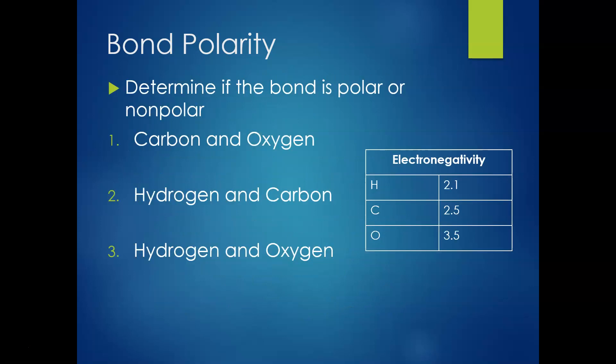So let's do some practice with this. You're determining if the bond is polar or nonpolar. So if we have carbon and oxygen, carbon is a 2.5 electronegativity. Oxygen is a 3.5. So if I take 3.5 minus 2.5, that equals 1, which is greater than 0.4, so that means it's polar.